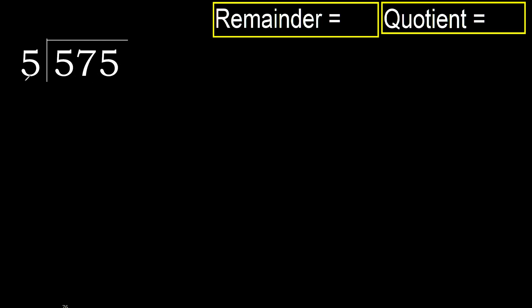575 divided by 5. 5 is not less, therefore start with 5. 5 multiplied by which number is nearest to 5, but not greater? 5 multiplied by 2 is 10 — 10 is greater. 5 multiplied by 1 is 5 — it is not greater. 5 minus 5 is 0. Next.